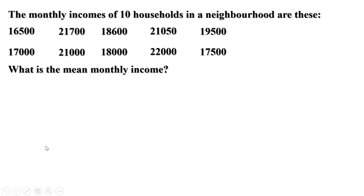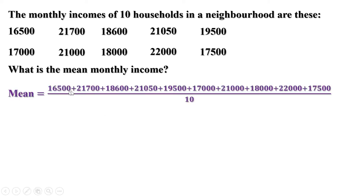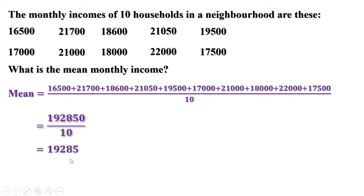There are 10 households. In order to find the mean, we have to add all these scores together, and since there are 10 households, we have to divide the sum by 10. That is, mean is equal to sum of all these scores divided by 10. When we add all these together, we get 1,92,850. Divided by 10, we get 19,285. The mean is 19,285.